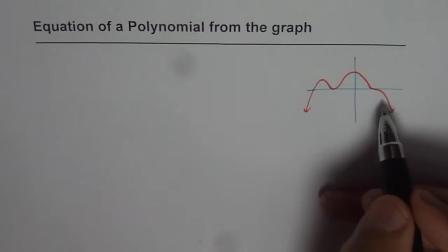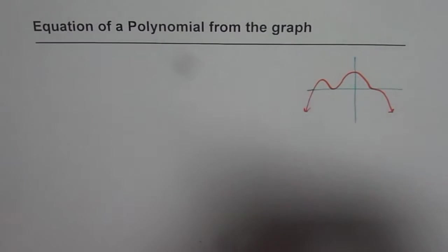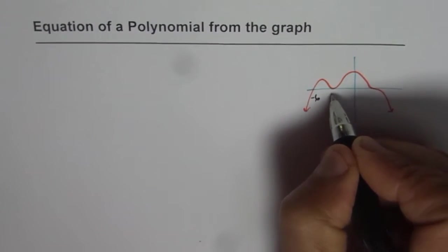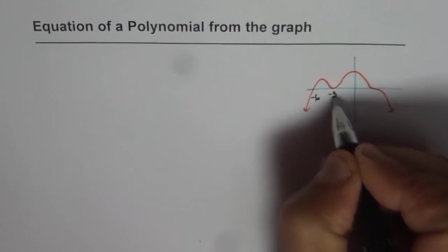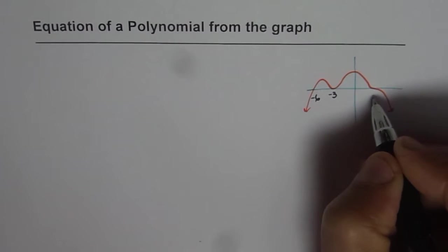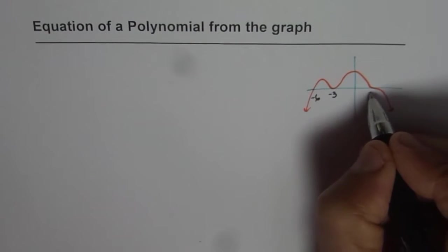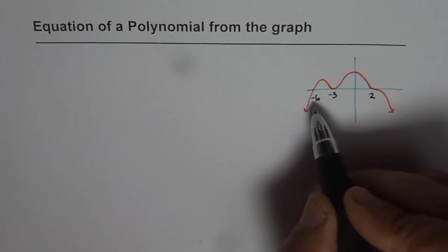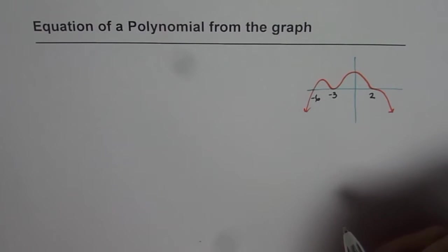From the graph we know this one is a linear zero. Let us say this position is at minus 6 and here we have a quadratic zero at minus 3 and a cubic zero. Let us say that one is at 2. So what we are trying to say is that the multiplicity of the zeros is 1, 2 and 3.